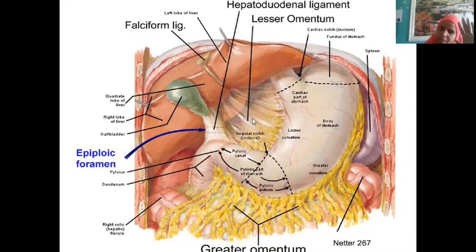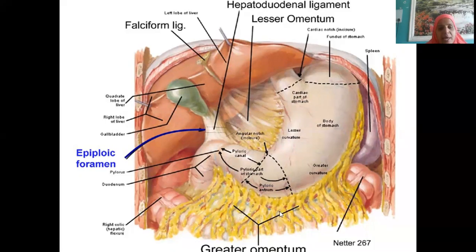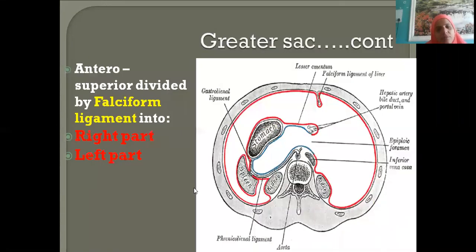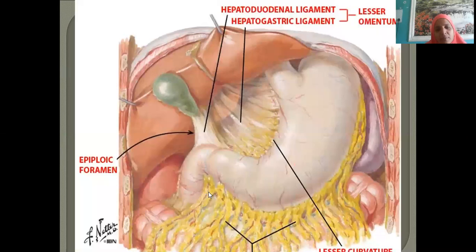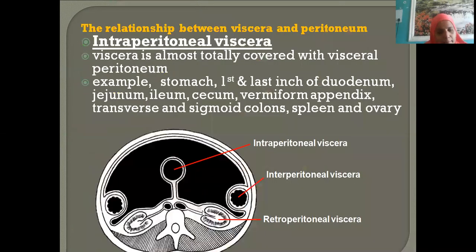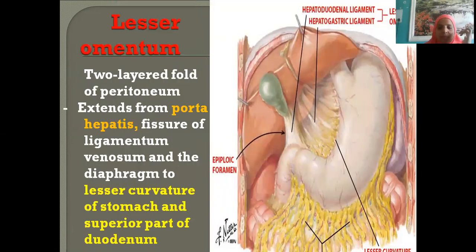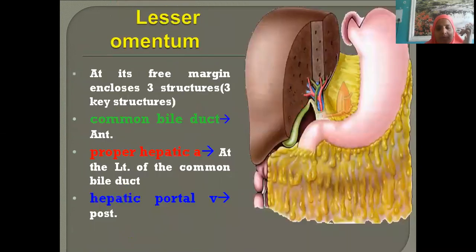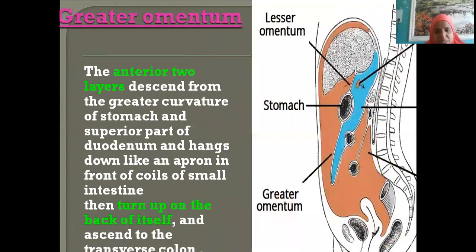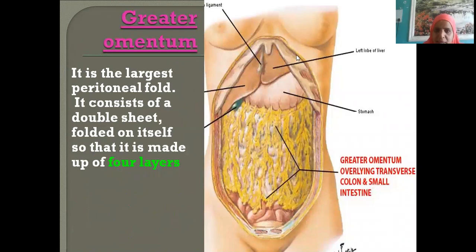The peritoneum covers the anterior aspect of the stomach and continues its journey downwards forming an apron. In Netter's atlas, you can see: after dissecting the anterior abdominal wall — skin, superficial fascia, oblique muscles, fascia transversalis, and parietal peritoneum — you find the liver with the falciform ligament between its lobes, and part of the stomach.